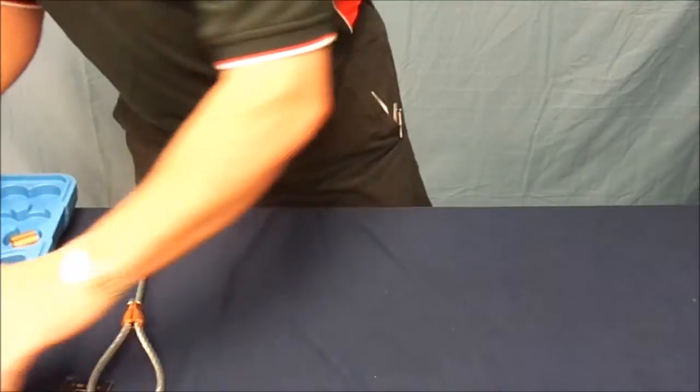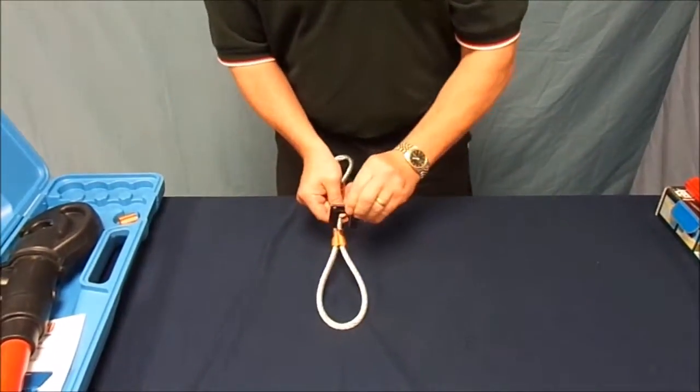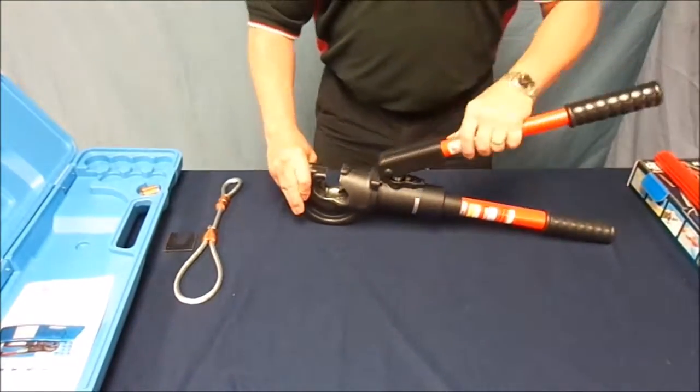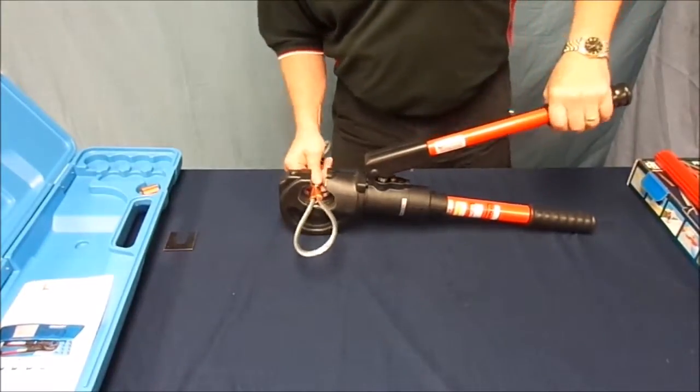After the first compression, we recommend that you use the supplied go gauge to check the finished after swage dimension using the corresponding cavity in the gauge. The gauge should pass easily over the swaged area.